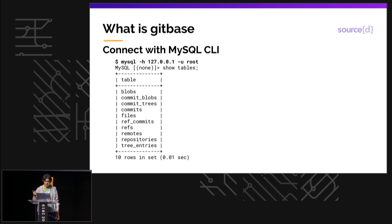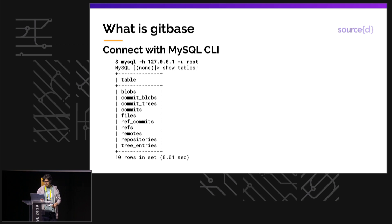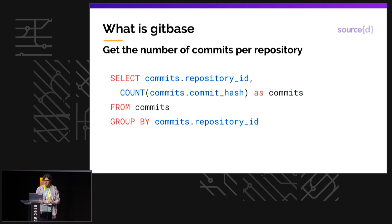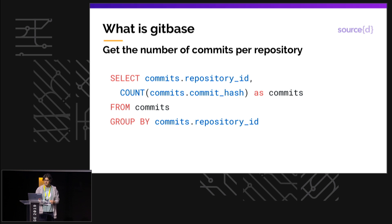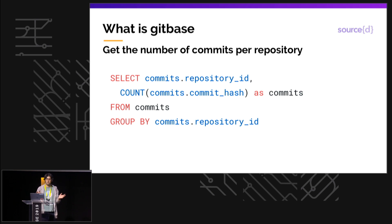You can start running queries. In this case I'm running SHOW TABLES, and you can see that the tables match a lot of the objects that we have in Git repositories. This is a very basic example. Here we are using GROUP BY and COUNT to get the number of commits per repository. As you can see, this is very similar to what you can do in a normal database — you don't need to do anything strange.